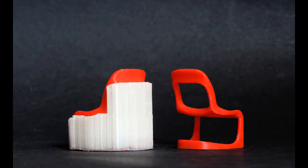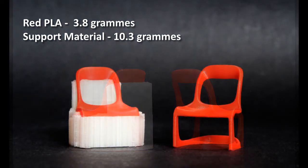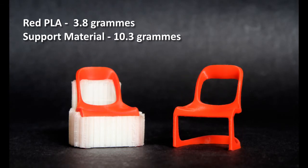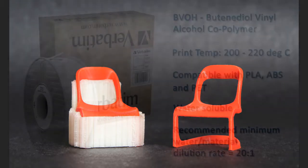One of the interesting consequences of being able to print complicated geometries using soluble support material is that it's very easy to find that you end up with more support material in the print than the actual material itself. If we take this chair print as an example, there's almost three times the amount of support material in this print compared with the actual material. And what that means is that your selection, handling and storage of your support material is just as important as it is for your main material. And really what you're looking for with a support material is something that's easy to print with reliable extrusion properties and a quick dissolve time on completion.